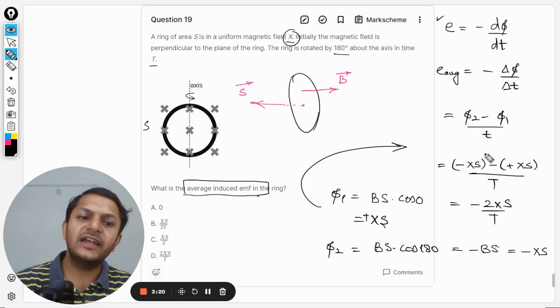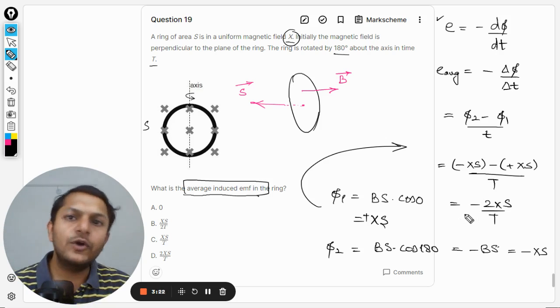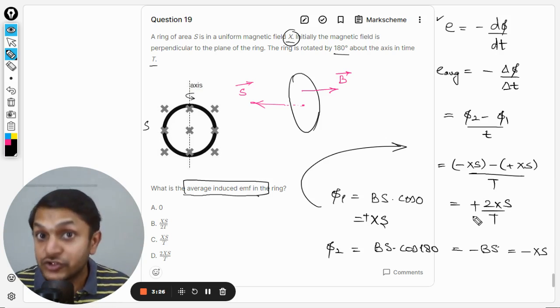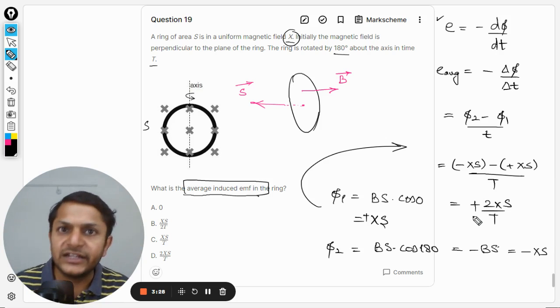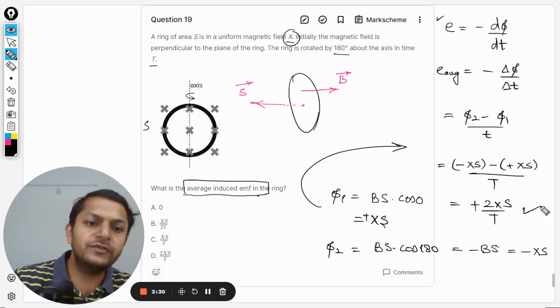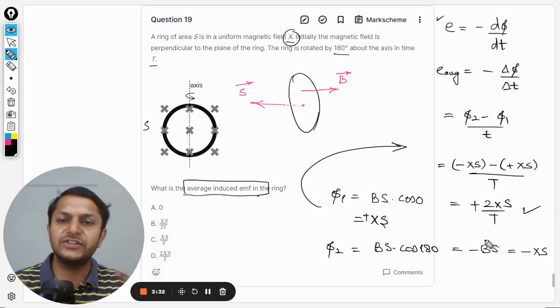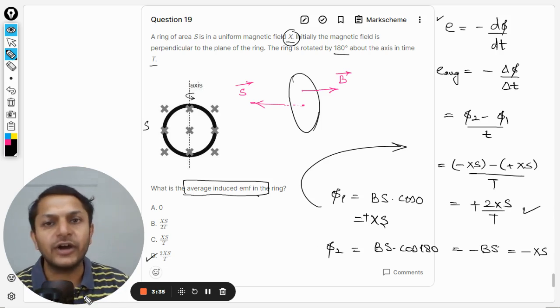Total time is T. Clearly my answer is this, and there is a negative sign here. If you do not want to neglect it, even then we would be getting the same answer. In both cases you would be getting a positive answer, which is 2XS divided by T, and so our answer is capital D.